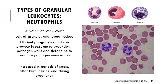Neutrophils are the most predominant granular leukocyte, accounting for 50 to 70 percent of white blood cells. They are larger than red blood cells with a lobed, purple-staining nucleus. They are very effective at phagocytosis and produce lysozyme — an enzyme that breaks down bacterial cell walls — and defensins, which break apart pathogen membranes of bacteria and fungi. Neutrophil levels are higher during periods of stress, serious burn injuries, and pregnancy.